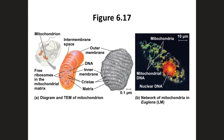Mitochondria are organelles present in all types of eukaryotic cells. They are the sites of cellular respiration, a metabolic process that uses oxygen to generate ATP. They have a smooth outer membrane and an inner membrane folded into cristae. The inner membrane creates two components: an intermembrane space and the mitochondrial matrix. Some metabolic steps of cellular respiration are catalyzed in the mitochondrial matrix. Cristae present a large surface area for enzymes that synthesize ATP. Mitochondria are also unique as they contain their own DNA.